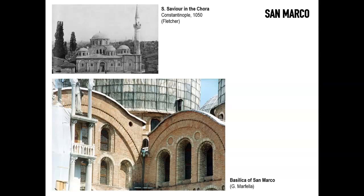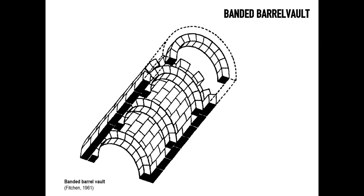Byzantine construction was the base of what would then become Romanesque construction of medieval time. Romanesque construction — distinct from Roman — took the techniques of Roman construction and adapted them to ecclesiastical architecture, using the semicircular arch as the generating device for creating vaults and domes. Before touching on the groin vault, which is the most characteristic method of vaulting of the Romanesque period, we can start by looking again at the barrel vault — a semicircular arch extruded in one direction.